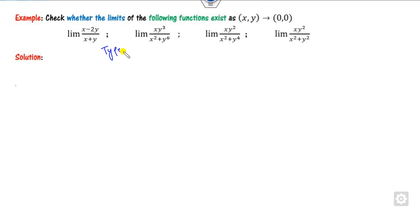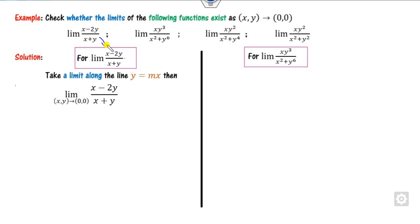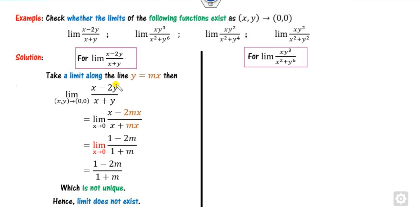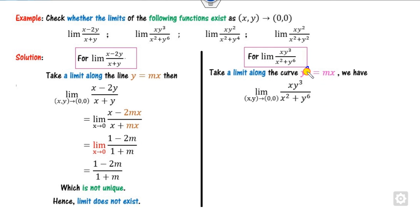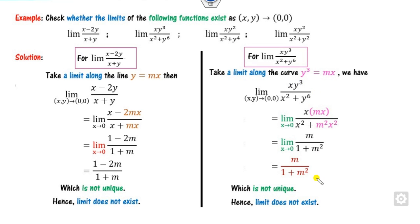Checking whether limits exist — again Type 1. We choose the path by setting the denominator to zero and taking y = mx. Substituting, x cancels and the expression depends on m. For different values of m, the answers differ — limit does not exist. For another example, the path is y = mx^(1/3) (from y³ = x). Substituting y³ accordingly, after calculation the result again depends on m. Hence the limit is not unique, and therefore the limit does not exist.